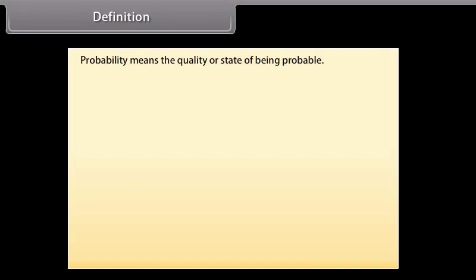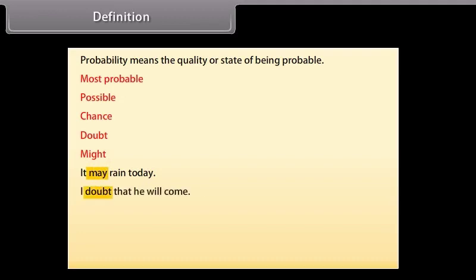Definition. Probability means the quality or state of being probable. In case of probability, we use words like most probable, possible, chance, doubt, might, etc. For example, it may rain today. The word 'may' shows probability. I doubt that he will come. Such words involve uncertainty.